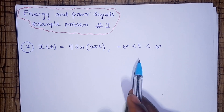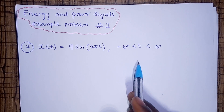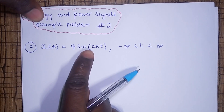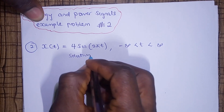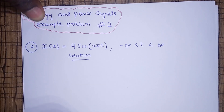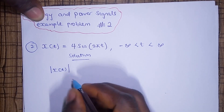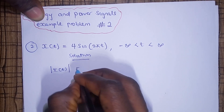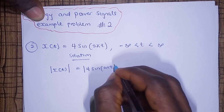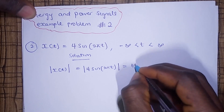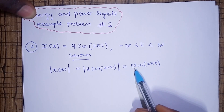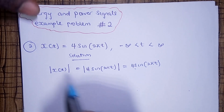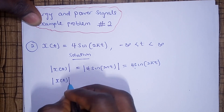Now, if we could recall, the steps in solving it were discussed in the first part of the video, but we are going to iterate over them now. The first thing we need to do is, after we are given the signal x of t, we need to find the absolute value of the signal. The absolute value will always make things positive, so if there is a negative 4, we will have positive 4 — whenever there is a negative sign, it turns to positive.